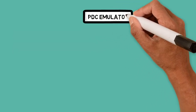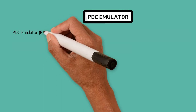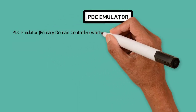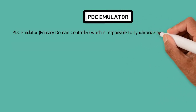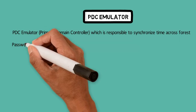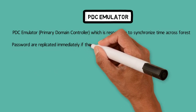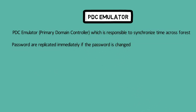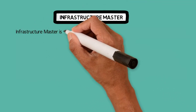PDC Emulator stands for Primary Domain Controller. It is responsible for synchronizing time across the forest. When you connect domain controllers to the root domain, the time changes according to the root domain. The same applies to client computers — when joining a domain, time is automatically synchronized to the root domain's time. PDC Emulator also replicates password changes immediately when a user account password is updated.